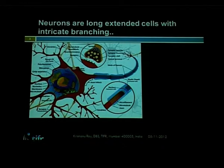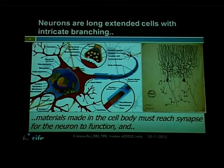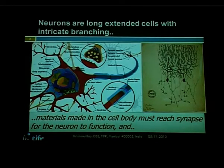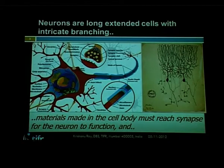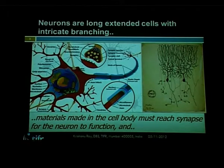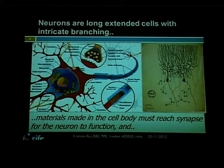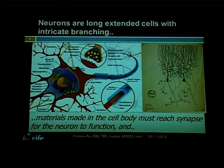In some axons this can be several meters long. The question we wanted to ask is how these materials made in the cell body of the neuron find their way to the presynaptic compartment, and how the balance of material at the presynaptic compartment is maintained. Why is it that if you run quite extensively, your synapses do not go dry? We have now defined a system where we can ask this question and try to find an answer.